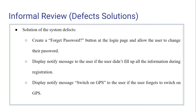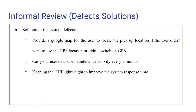Now let's look at the solution for the defects. For the first defect, we create a forget password button in the login page to allow the user to change their password when they forget. The system will also display a notify message to the user if they didn't fill up all the information during registration. A notify message to switch on GPS will be displayed to the user if the user forgets to switch on GPS. The system should also provide a Google Map for the user to locate the pickup location if the user didn't want to use or didn't switch on GPS.